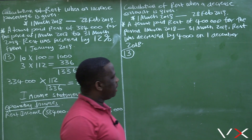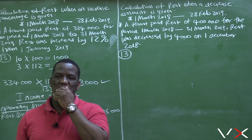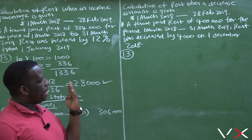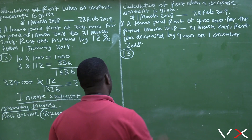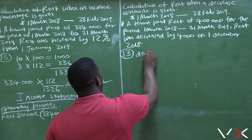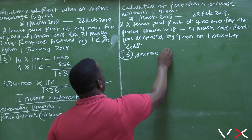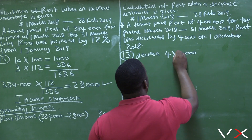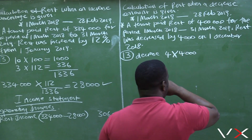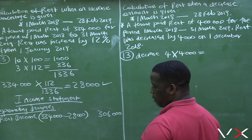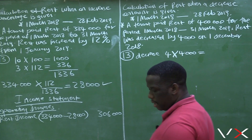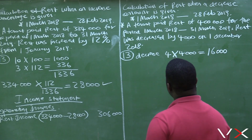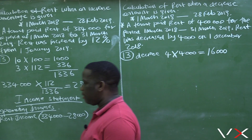If you calculate the number of months from the 1st of December, it is December, January, February, and March — so that's four months. The decrease is four months multiplied by four thousand, which equals sixteen thousand. So the total decrease is sixteen thousand.